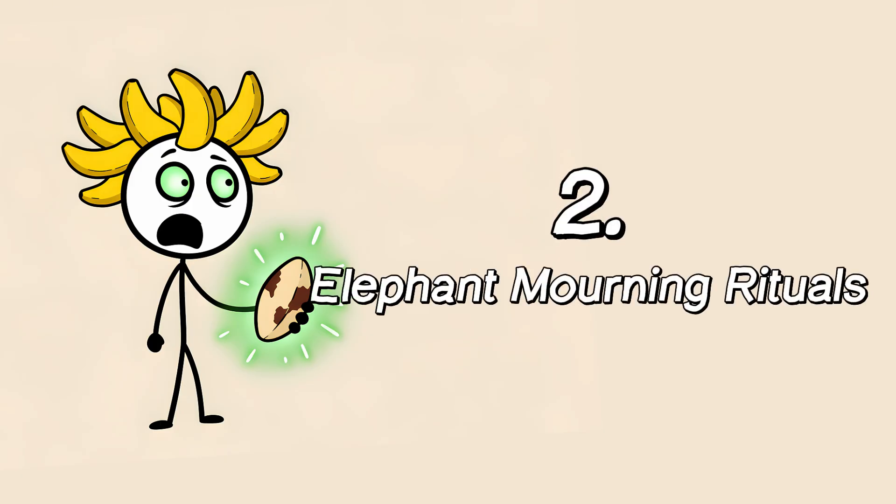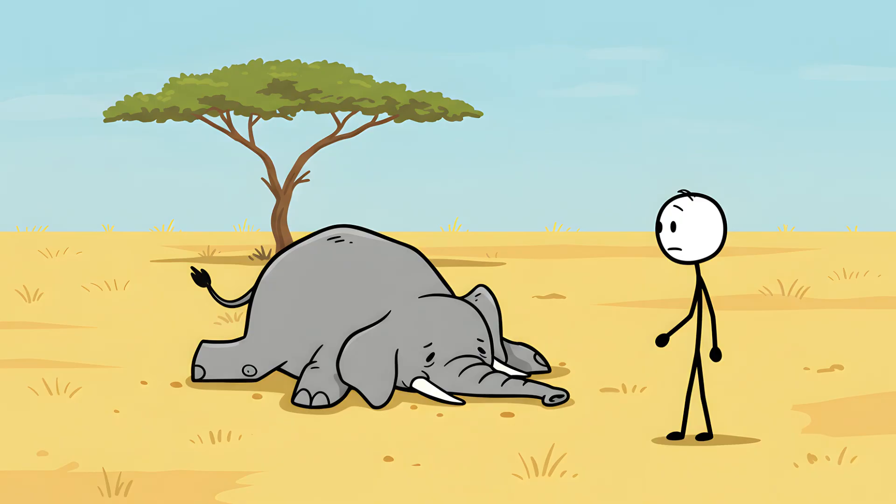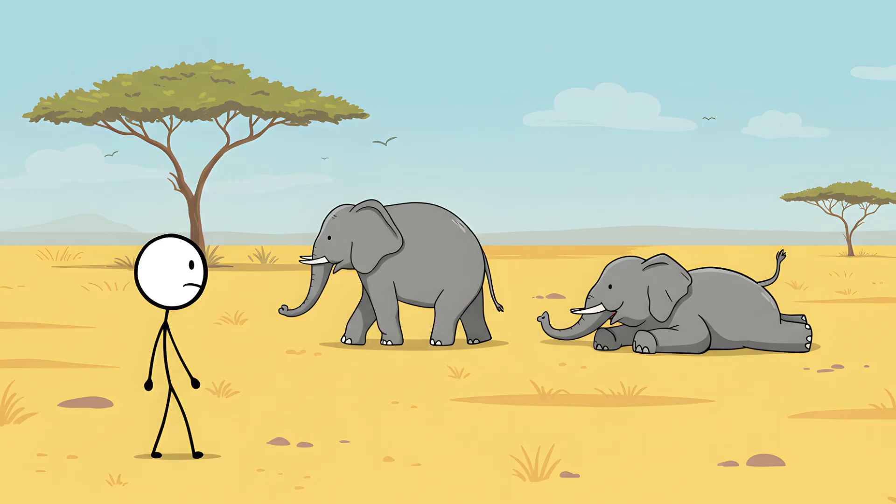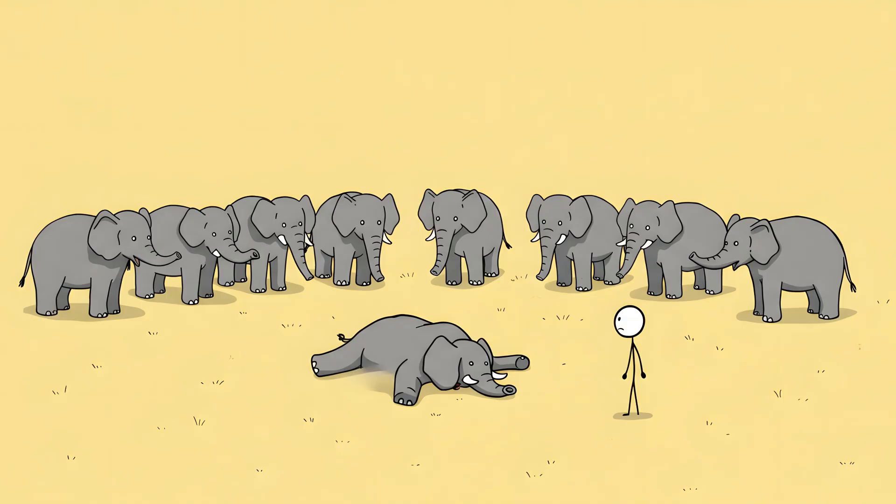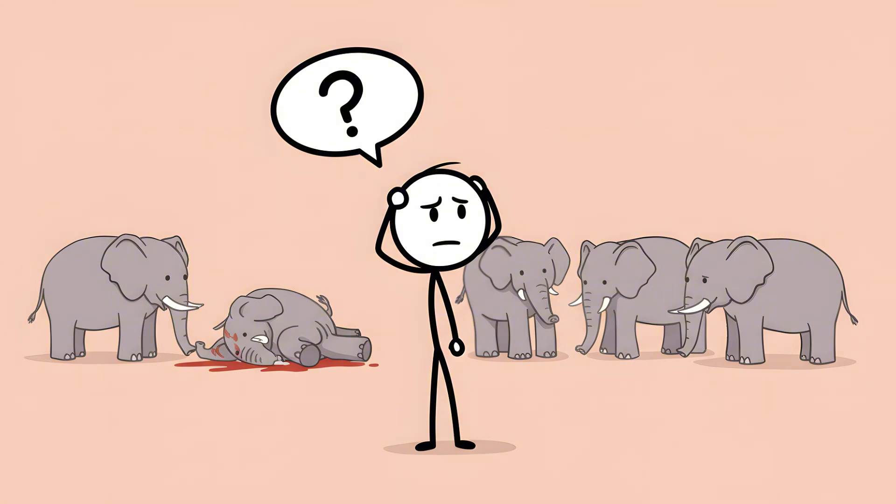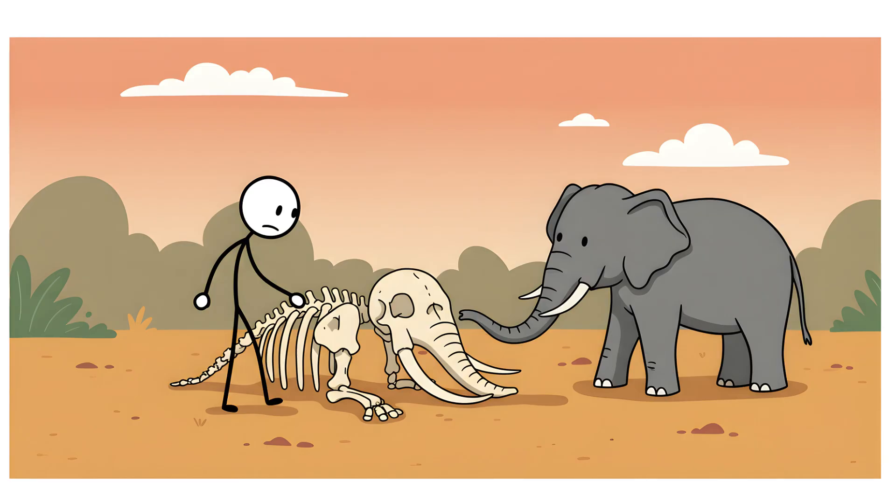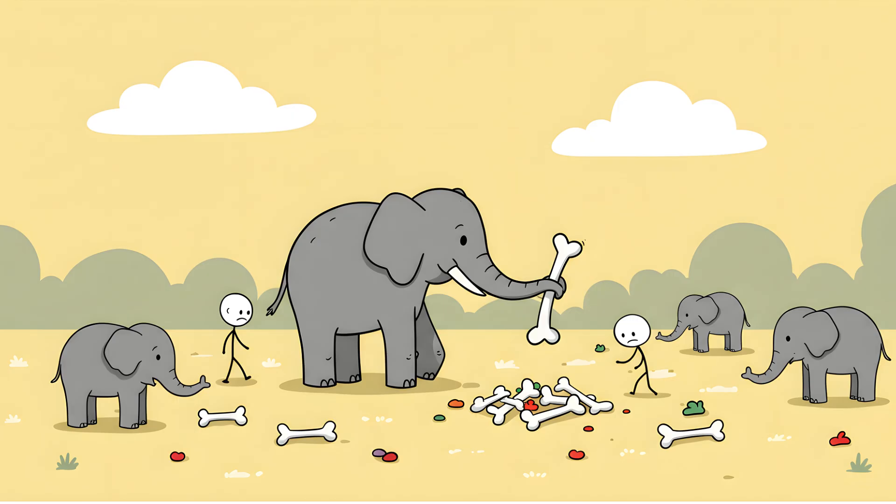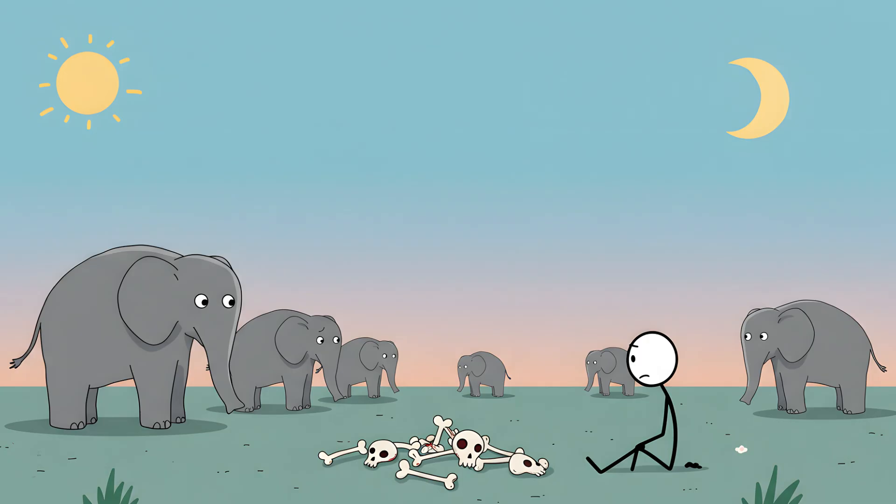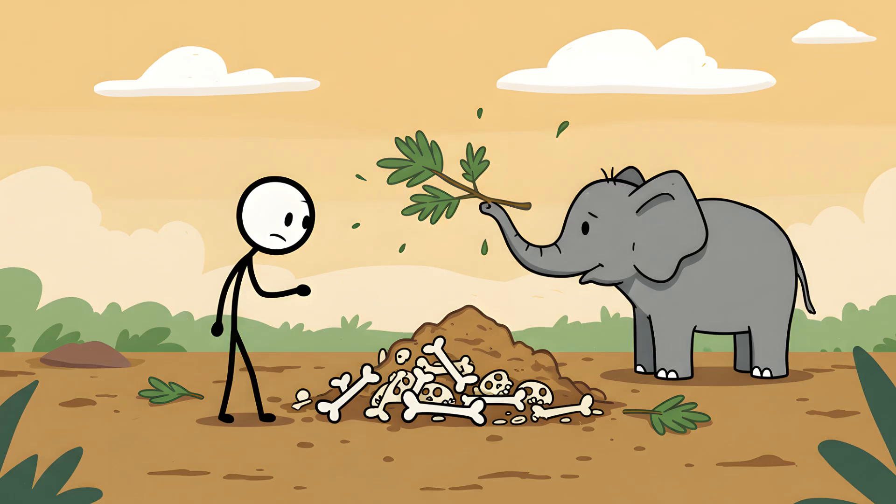Number two, elephant mourning rituals. An elephant dies in the savannah. Its life is over, but its story isn't. Soon, other elephants, family members, or even total strangers from other herds will approach the body. They will stop. They will fall silent. What happens next is something that science struggles to define. They will gently touch the body with their trunks, exploring the bones, especially the tusks and the skull. They will sometimes pick up the bones and carry them for a short distance before placing them back down. They will stand over the remains for hours, sometimes days, in a silent, somber vigil. They have been observed covering the body with dirt and branches, a kind of makeshift burial.